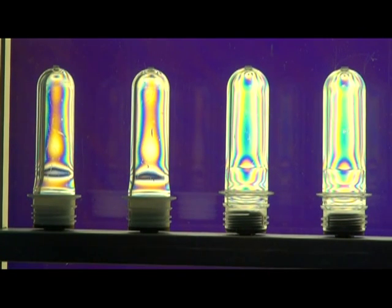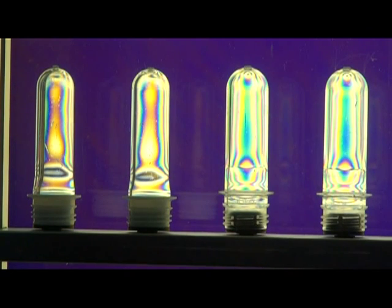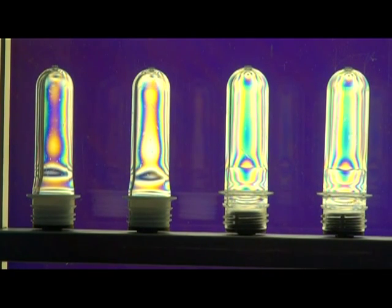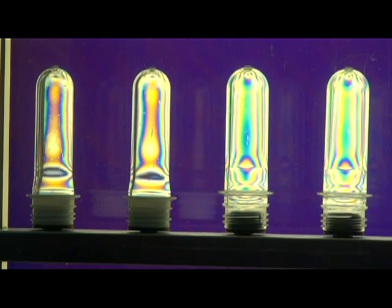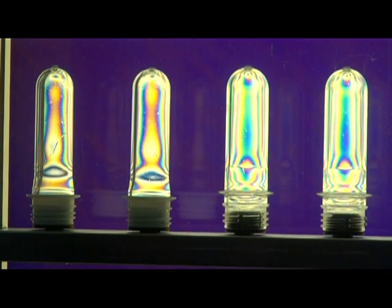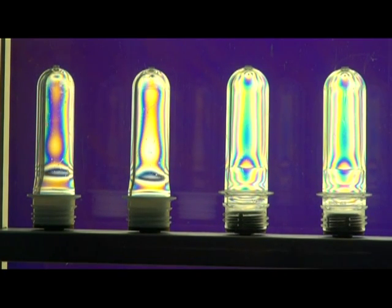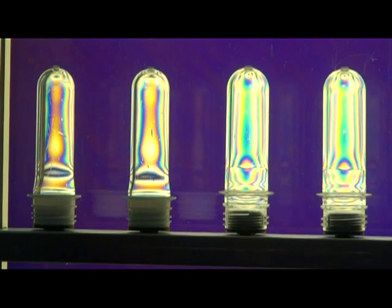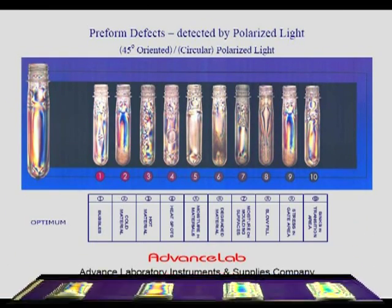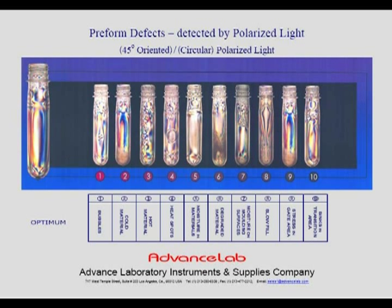Advanced Lab provides a comparison chart so that irregularities may be compared with common molding problems, such as sinks in the transition area, stress in the gate area, slow fill, moisture on molding surfaces, degraded material, moisture in material, heat spots, hot material, cold material, or bubbles.